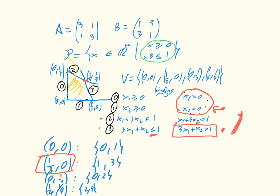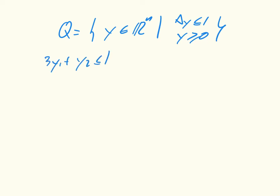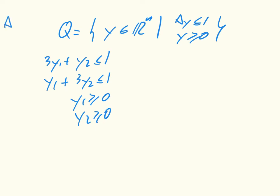We can do the same for Q, and we'll just do that very briefly. Recall the definition for the column player: Q = {y ∈ ℝⁿ : Ay ≤ 1, y ≥ 0}. This corresponds to the inequalities: 3y1 + y2 ≤ 1, y1 + 3y2 ≤ 1, y1 ≥ 0, y2 ≥ 0. Remember that A = [3, 1; 1, 3], which is where these numbers are coming from.